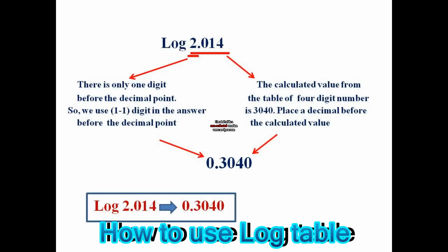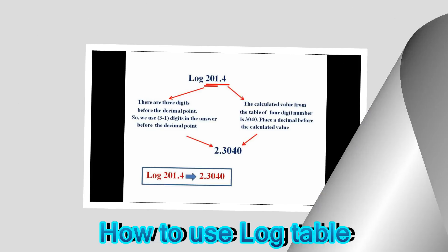Here is another example: log 2.014. The calculated value from the table for the 4-digit number is 3040. Place a decimal point before the calculated value to get 0.3040. From the question, there is only 1 digit before the decimal point. In the answer, we use only 1 minus 1 digits. Therefore, the answer becomes 0.3040.